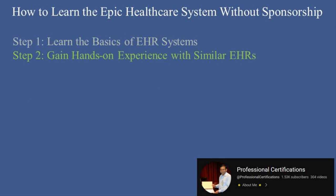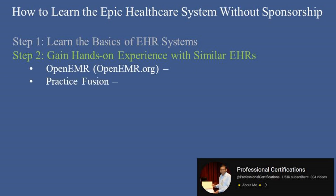Step 2: Gain Hands-On Experience with Similar EHRs. Since direct access to EPIC is limited, you can practice on open-source EHR systems. OpenEMR (openemr.org) is a free, open-source EHR system. Practice Fusion is a cloud-based EHR with a free trial. Cerner and Meditech are competitors of EPIC that offer online resources. While not identical, these systems help you understand the workflow of EHRs, which will make learning EPIC easier.